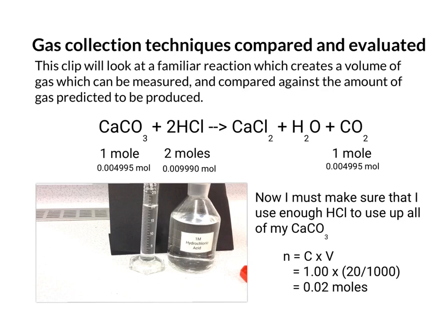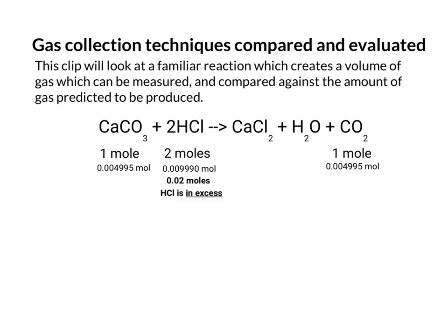So I end up with 0.02 moles. So let's compare that against what we need. So because I've got 0.02 moles of HCl I have well enough to actually completely react with 0.004995 moles. That means that HCl is in excess. That means all of the calcium carbonate should react completely.